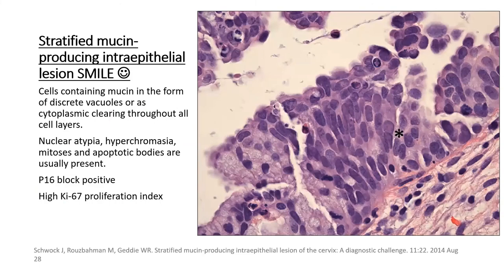A variant of AIS is stratified mucin-producing intraepithelial lesion (SMILE). This is characterized by stratified epithelium containing mucin with nuclear atypia, hyperchromasia, and apoptotic bodies. Once again, p16 and Ki-67 will show an HSIL-like pattern — that is, block positivity for p16 and high Ki-67.